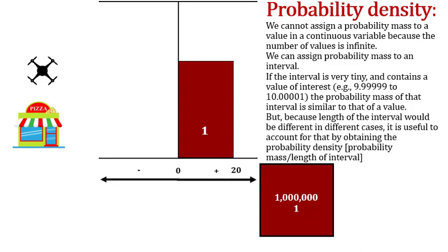But what we can do is consider a very tiny interval that contains the value of interest — let's say 10. So we construct a very tiny interval, for example from 9.9999999 to 10.0000001. It's a very tiny interval, but we can determine what's the probability mass of that interval, which would be very close to saying: what's the probability mass of the value 10?